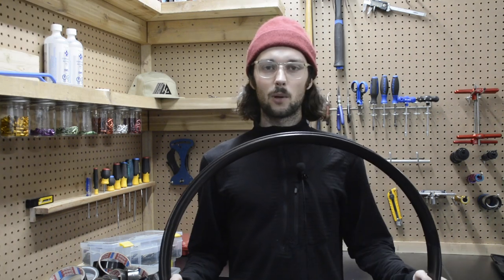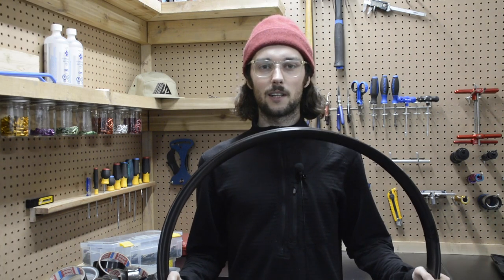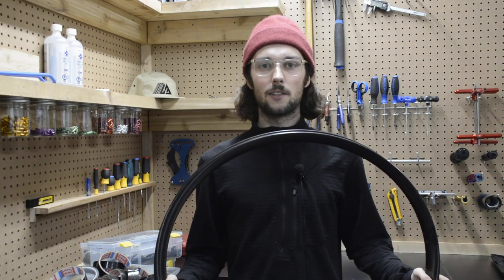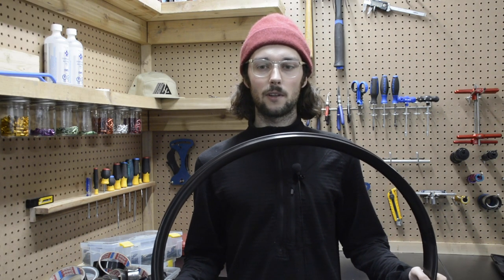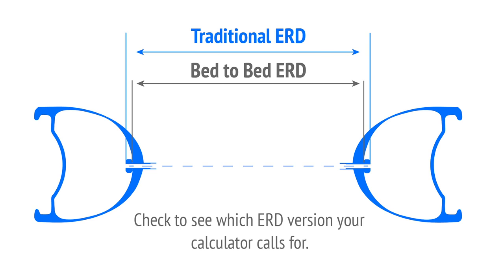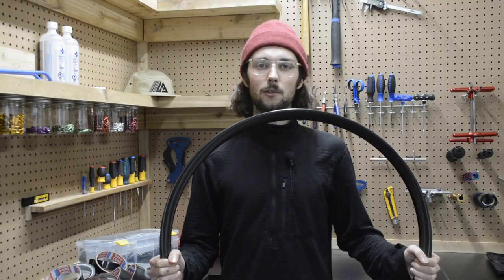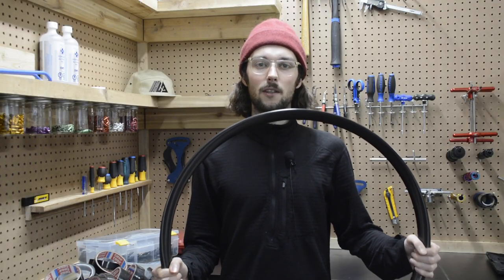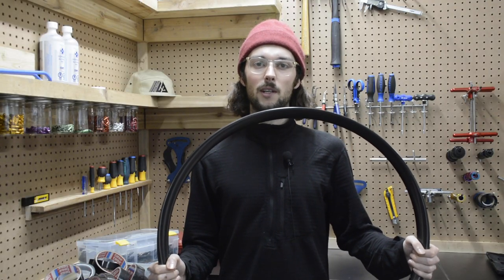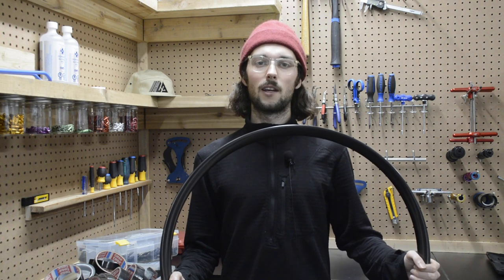Hey, it's Matt from Light Bicycle, and this is how you calculate your spoke lengths. When properly building a high quality wheel, you're going to need to determine your spoke lengths. You'll need first to know your rim's ERD, which stands for effective rim diameter. All of our rim ERDs are listed on the website under each product page in the rim specs section.